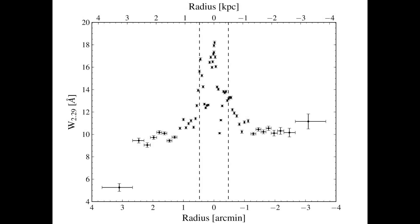Finally, in Figure 6 of our paper, we show the equivalent width of the CO bandhead at 2.29 microns as a function of radius. The data clearly show a significant increase in the equivalent width within 500 parsec radius, which is the region inside the dashed lines. These results suggest that red supergiants dominate the near-infrared continuum throughout the starburst core.